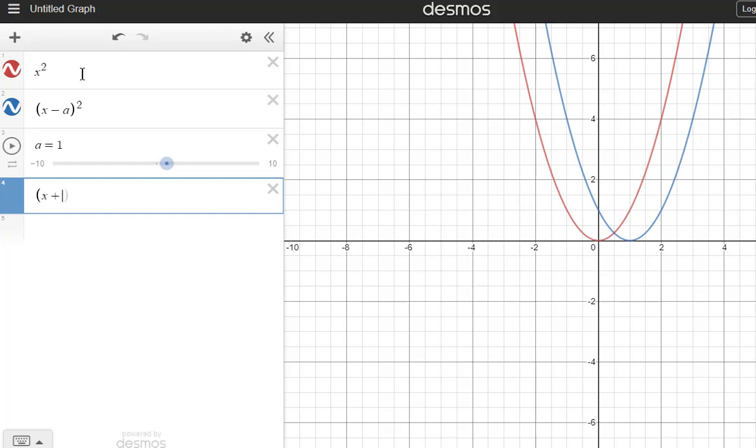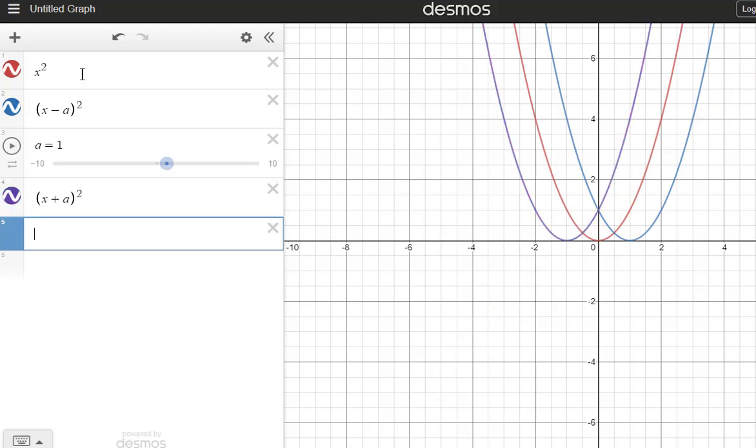So you guys are going to put in (x plus a) squared, and then putting numbers out front. So if you had ax squared, we'll just do it this way.